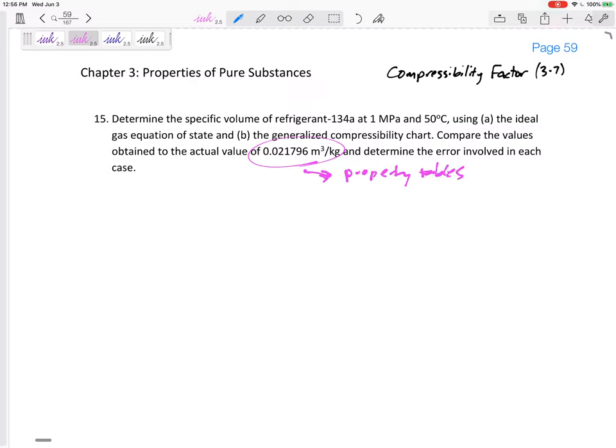Compare the values obtained to the actual value of 0.021796 meters cubed per kg, and we could get this from the property tables. The property tables, if we have property tables, are the most accurate. But if we don't and maybe we can assume an ideal gas, then PV equals RT might be appropriate, or if we can use the compressibility factor to correct the ideal gas equation, PV equals ZRT. So that's the actual value and we want to determine the error.